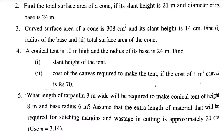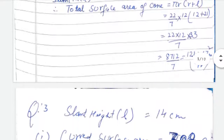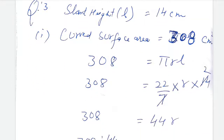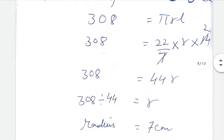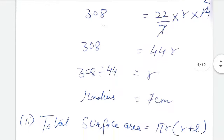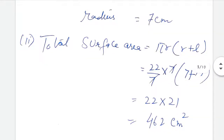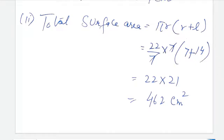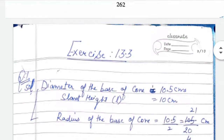Curved surface area of a cone is 308 centimeters square and its slant height is 14 centimeter. Find: first, radius of the base, and second, total surface area of the cone. Curved surface area equals πrl, and we know π = 22/7, l = 14. Comparing both values, radius comes out to be 7 centimeter. When radius is found and slant height was already given, we apply the total surface area formula πr(r + l). After calculation, 77 cancels and our calculation becomes very simple.